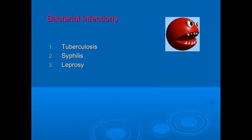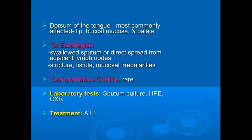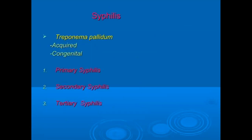Bacterial infections consist of three types of diseases: tuberculosis, syphilis, and leprosy. Tuberculosis is a chronic infectious disease. Clinical features include oral lesions, which are rare and secondary to pulmonary tuberculosis. Primary infection involves the tonsils or adenoids, and secondary infection occurs through coughing or infected sputum. Treatment is anti-tuberculosis therapy (ATT) and laboratory tests including sputum culture and histopathological examination should be performed.